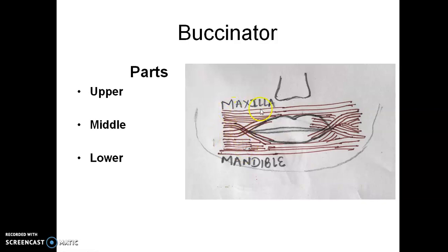Upper part begins from this jaw, upper jaw, maxilla. Lower part begins from mandible. The middle part begins at the junction between the two, maxilla and mandible.